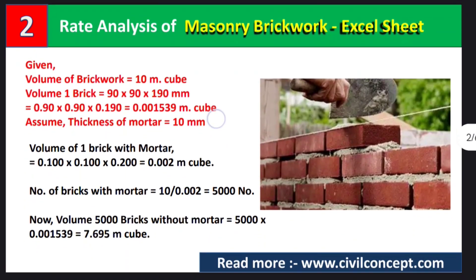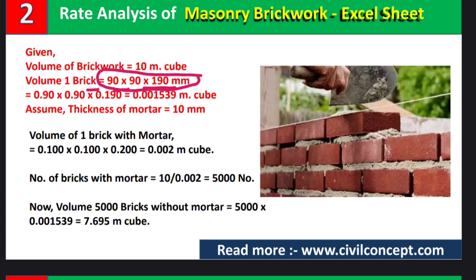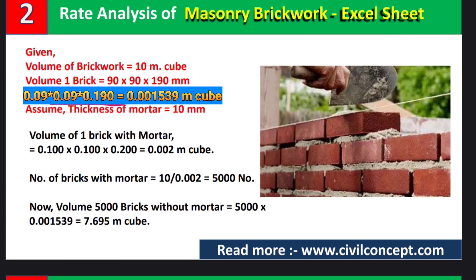The given data: volume of brick work is 10 cubic meters. The volume of one brick is 90 × 90 × 190 mm, which is the standard size — this may differ by location. The total volume of one brick will be length × width × height, and multiplying these gives 0.001539 cubic meters per single brick.